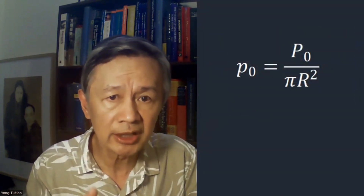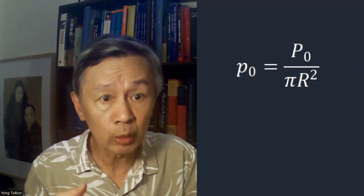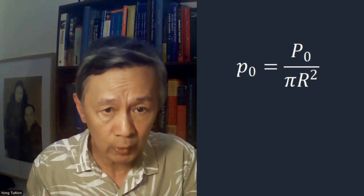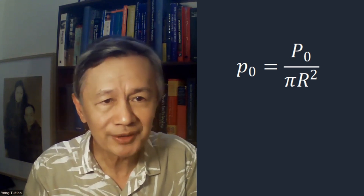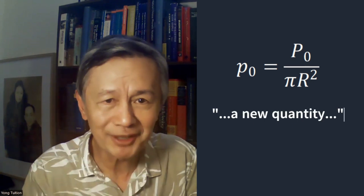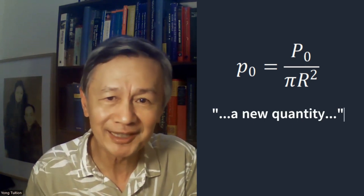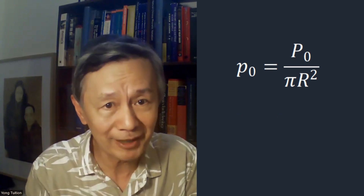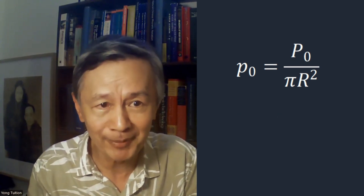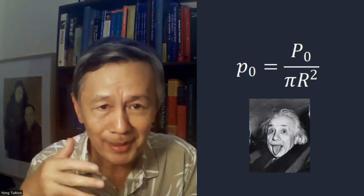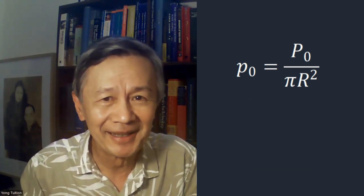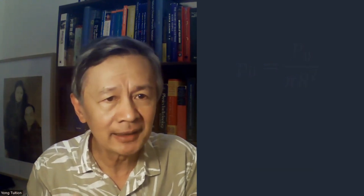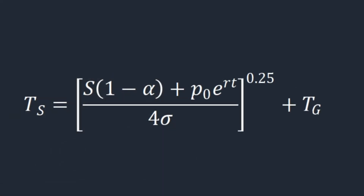The second mistake made by Tom Murphy is more serious. Without any justification, he divided his initial power P sub zero by the cross-section area of the Earth, pi r squared. Notice that he calls this small p sub zero a new quantity in his paper — perhaps he couldn't find any proper term for it in physics. And then he simply added it to the solar radiation contribution, as shown here.